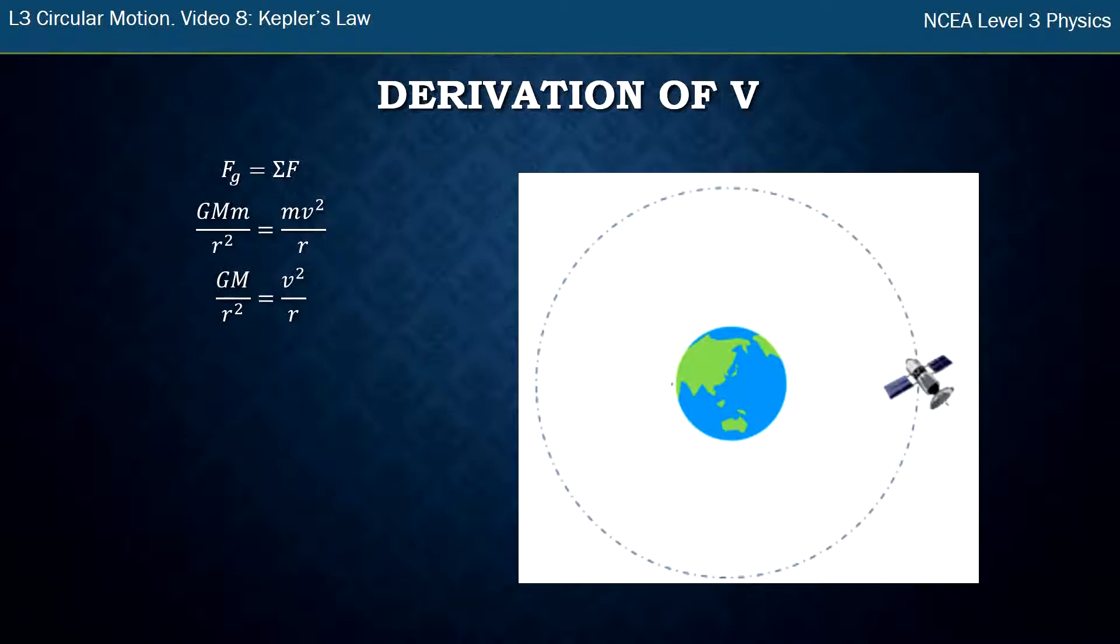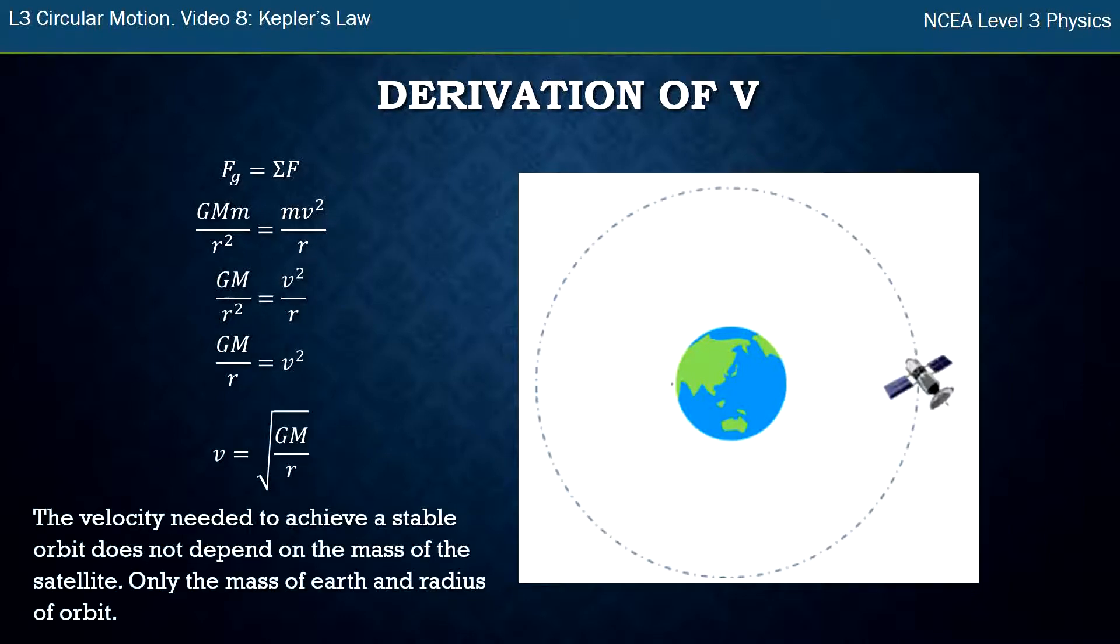I can also multiply both sides by r because there's at least one r on both sides, and we get a simplification. Given that GM over r equals v squared, I can find the square root to get the velocity. This velocity is the velocity needed to achieve a stable orbit.